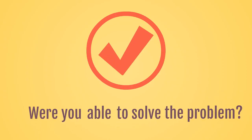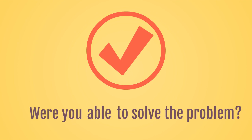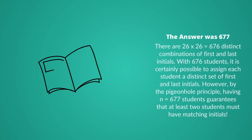Were you able to solve the problem? The answer was 677. There are 26 times 26 equals 676 distinct combinations of first and last initials. With 676 students, it is certainly possible to assign each student a distinct set of first and last initials. However, by the pigeonhole principle, having n equals 677 students guarantees that at least two students must have matching initials.